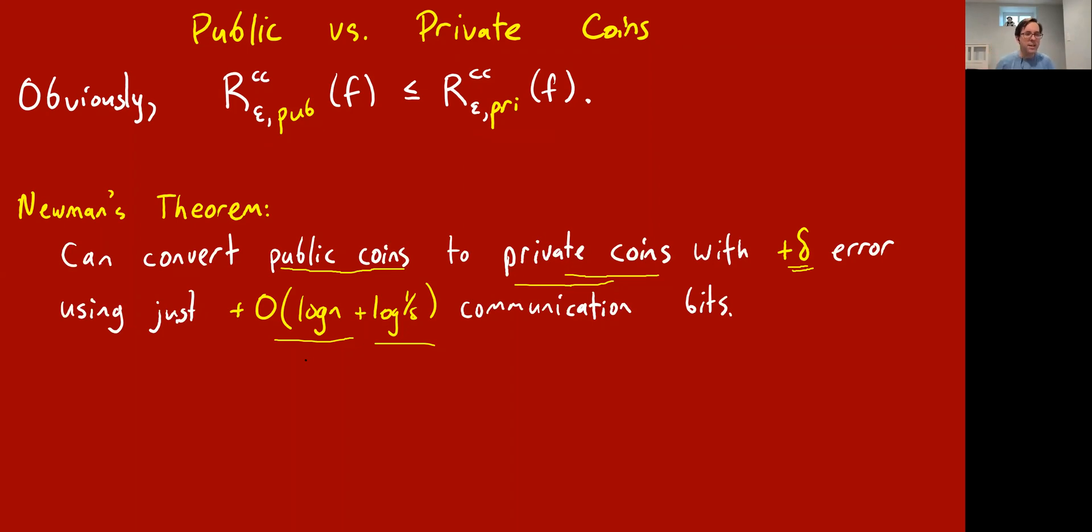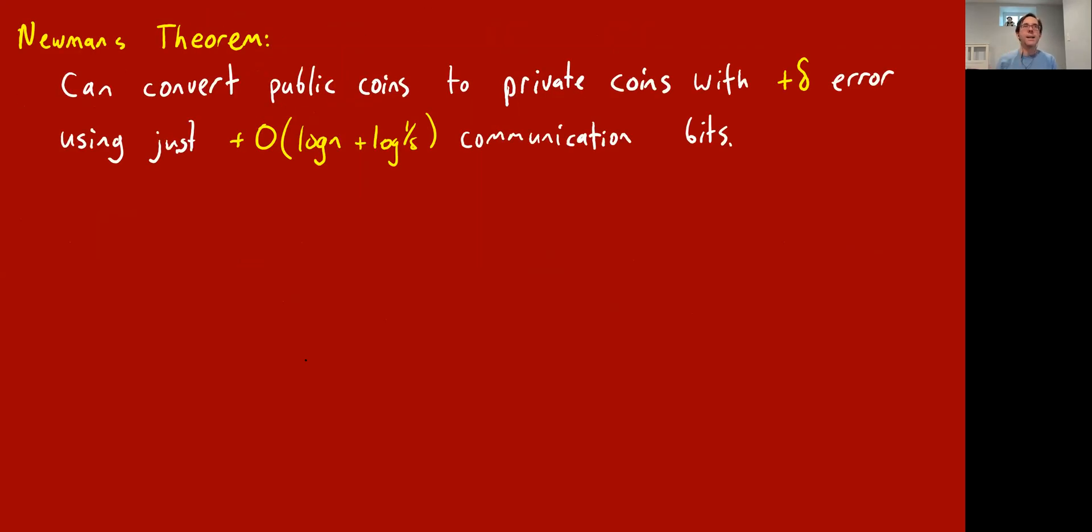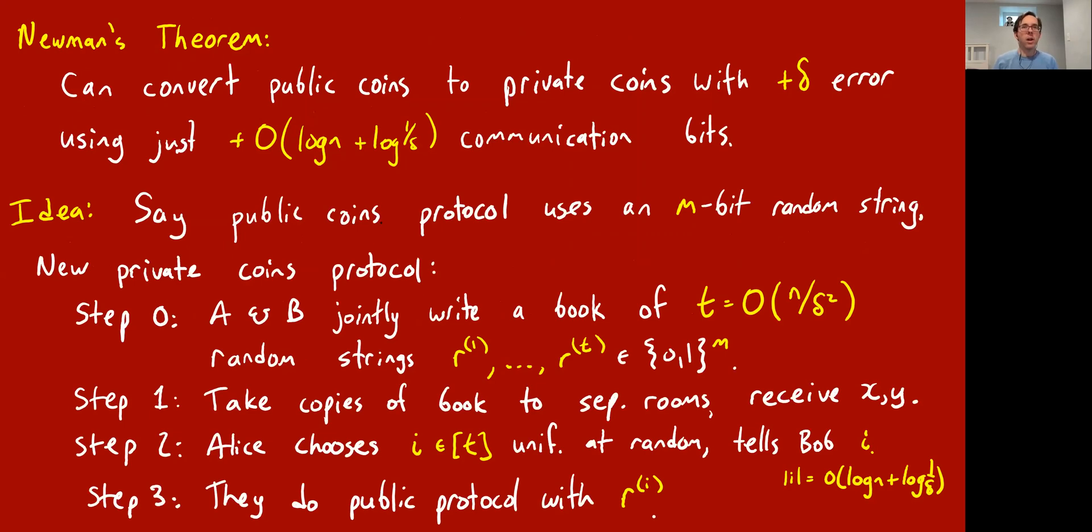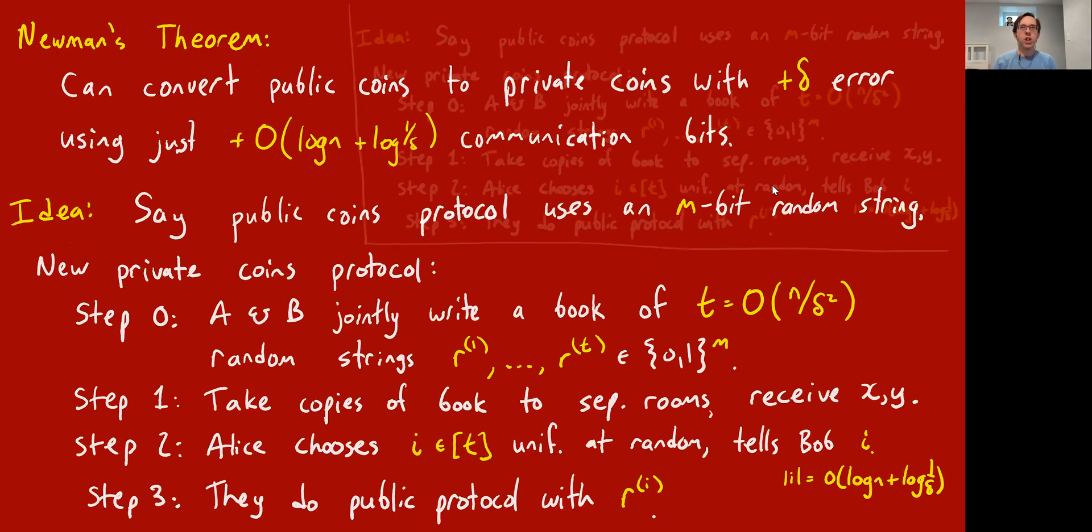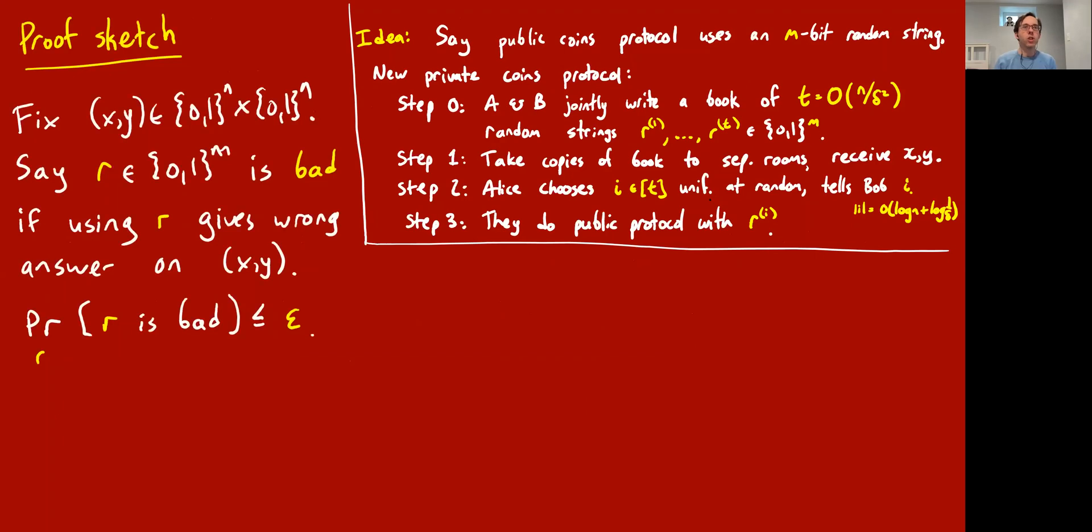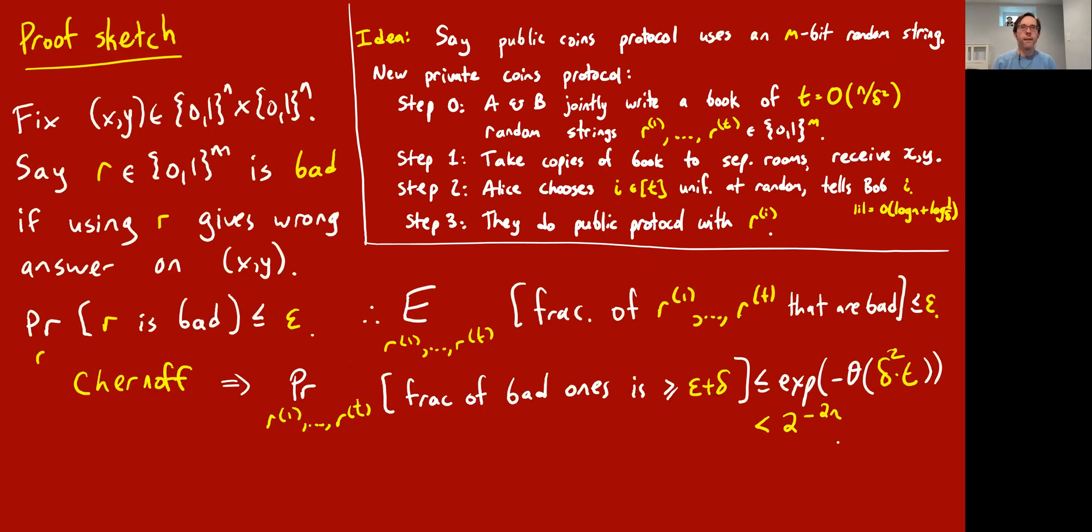We actually can settle on public coins and feel as though we're not cheating really, not cheating up to log n bits in our communication protocols. Let me not go over the proof of this in the interest of time, or maybe I'll come back to it after the class is over. But it's kind of a standard derandomization proof using Chernoff bound plus union bound. Here's the fast version of it on slides.